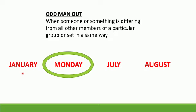January, Monday, July, and August. Here, January, July, and August are the names of months. Except Monday — Monday is not a month, it is a day of the week. So Monday is the odd man out, as it does not belong to this group.